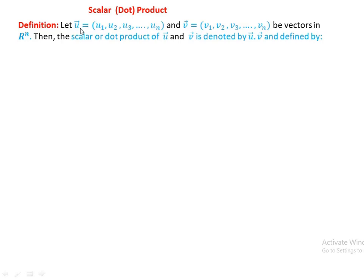Let the vector u have components u1, u2, u3, ..., un, and the vector v have components v1, v2, v3, ..., vn — two vectors in R^n. Then the scalar or dot product of u and v is denoted by u dot v.